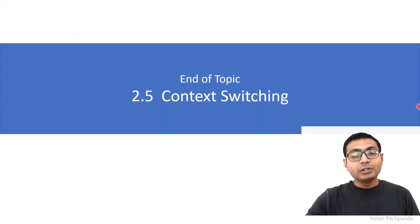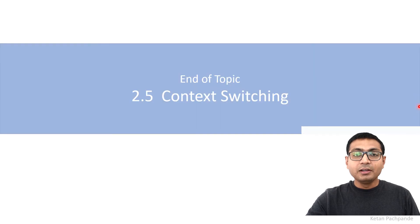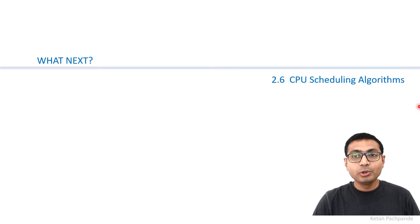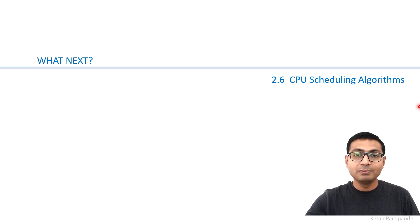That brings us to the end of the topic of context switching. In the next session we are going to learn about CPU scheduling algorithms, starting with First Come First Serve. Thank you for attending this session.